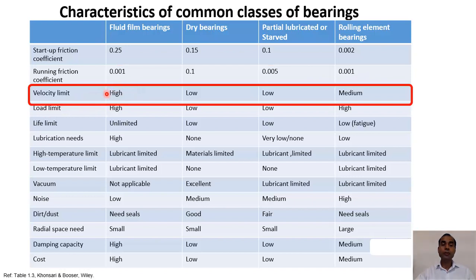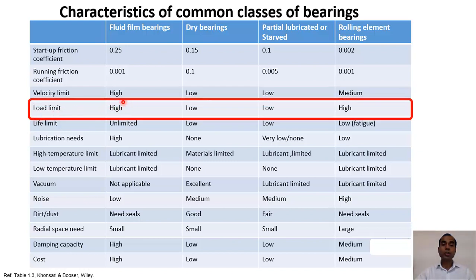Regarding velocity limit, fluid film bearings can run at extremely high speeds — a key advantage. Dry bearings are limited due to thermal frictional heating. Partially lubricated bearings also have a low velocity limit. Rolling element bearings have a medium velocity limit. For load limit, fluid film bearings can take very high loads, dry and partially lubricated bearings have low load limits, and rolling element bearings also have a high load limit.